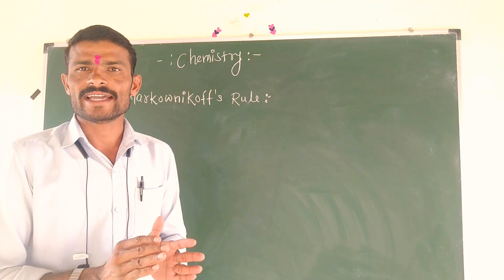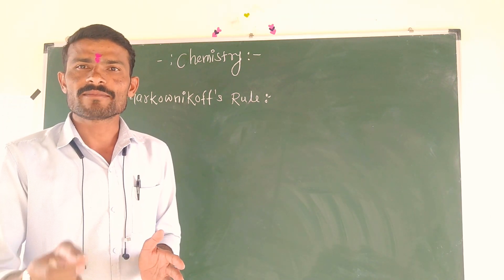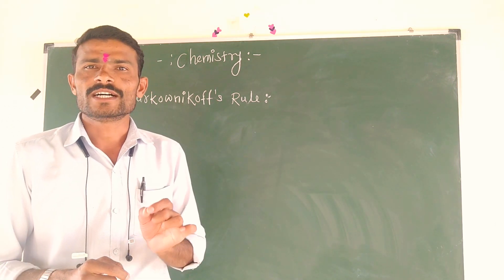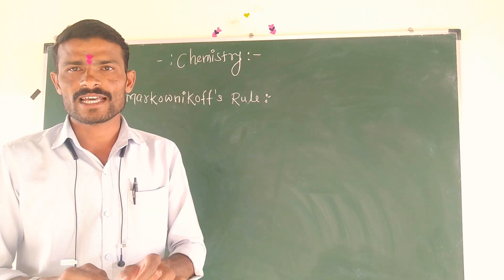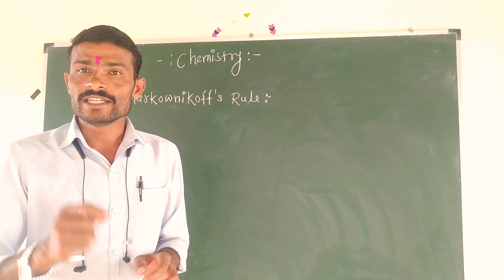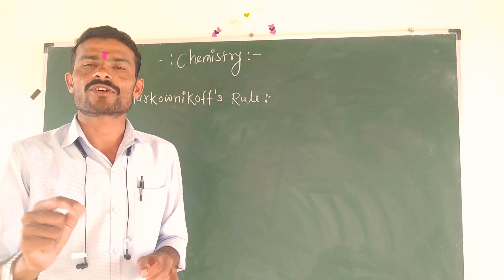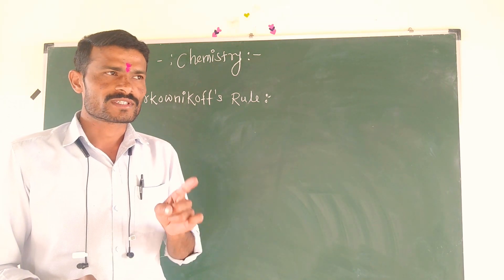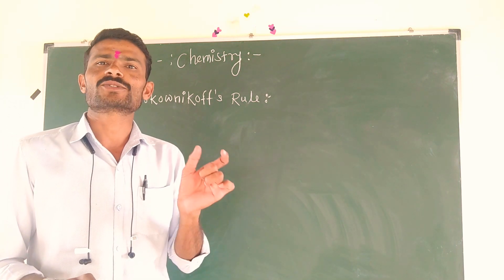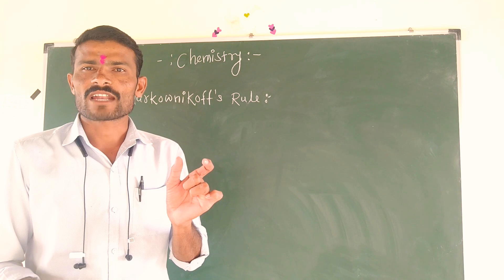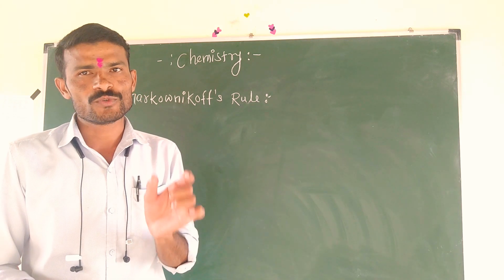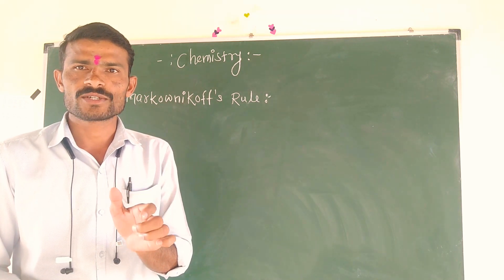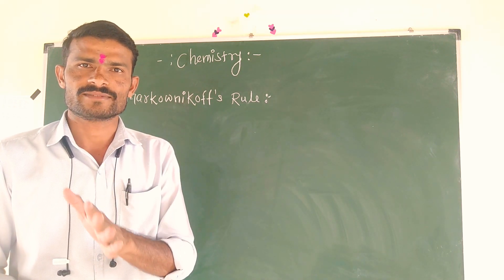When an unsymmetrical reagent gets added to an unsymmetrical alkene, the negative part of the reagent gets attached to that unsaturated carbon atom which carries a less number of hydrogen atoms.